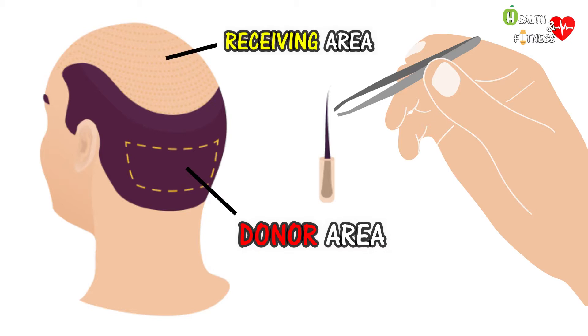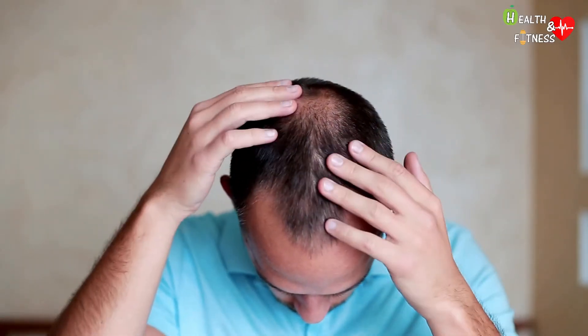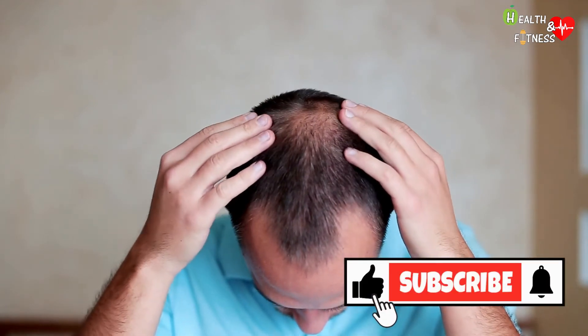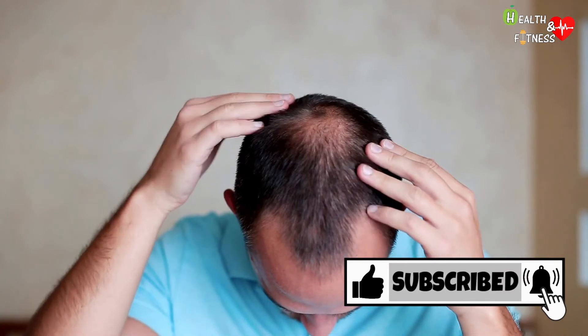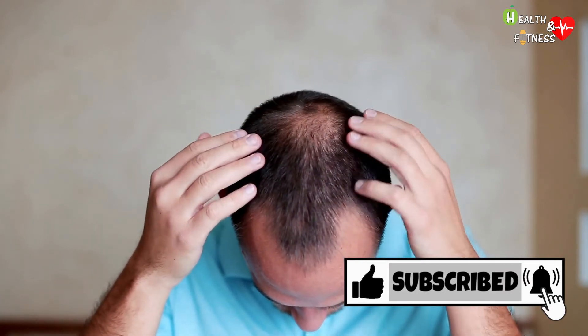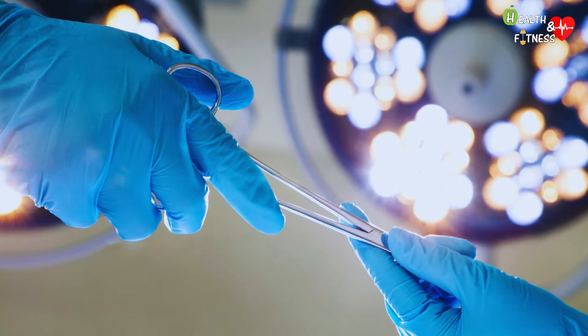Fortunately, in most people affected by androgenetic alopecia, the most common type of hair loss, a crown of hair remains in the occipital region available for transplantation.